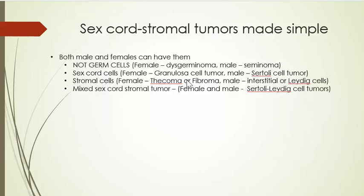Now, these are called uterine tumors resembling ovarian sex cord tumors. The cells we saw when we looked at this slide all resembled granulosa cells, or one could argue they look like Sertoli cells in the male. One thing we did not see in this particular case is the characteristic Call-Exner bodies, which are often seen in granulosa cell tumors in the ovary. These have been reported in human UTROS, but were not present in the baboon cases.